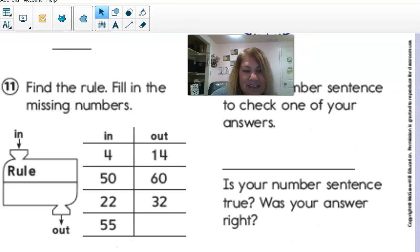Number eleven, this is what we've just been talking about. Here's our machine. We put a number in, boop, a new number comes out. So with number eleven, we have one thing, we have actually two things we have to figure out. The first thing we have to figure out is what's the rule.